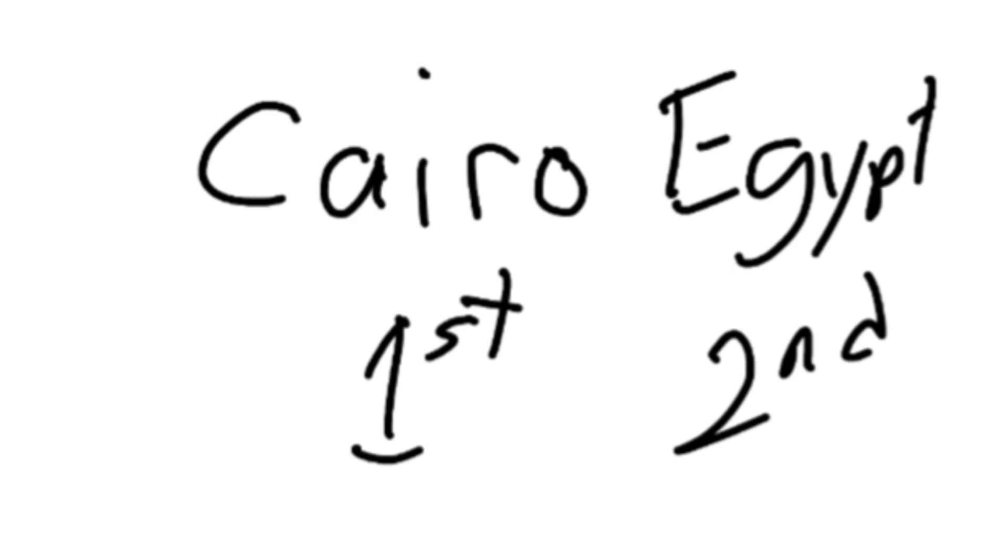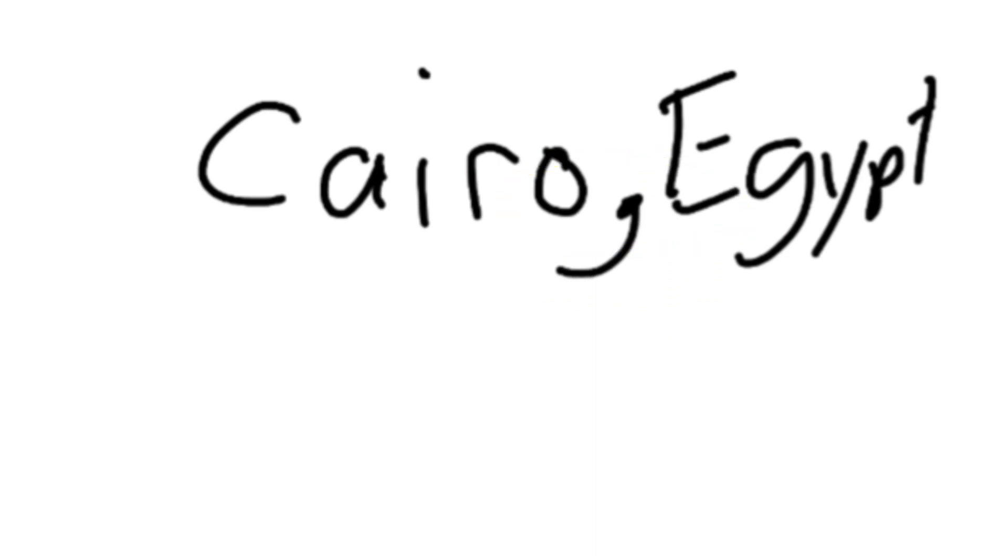And I forgot one thing when I wrote Cairo, Egypt. What did I forget? You know. A comma. We need a comma after the city, but before the country. Very easy. Let's move on to number two.